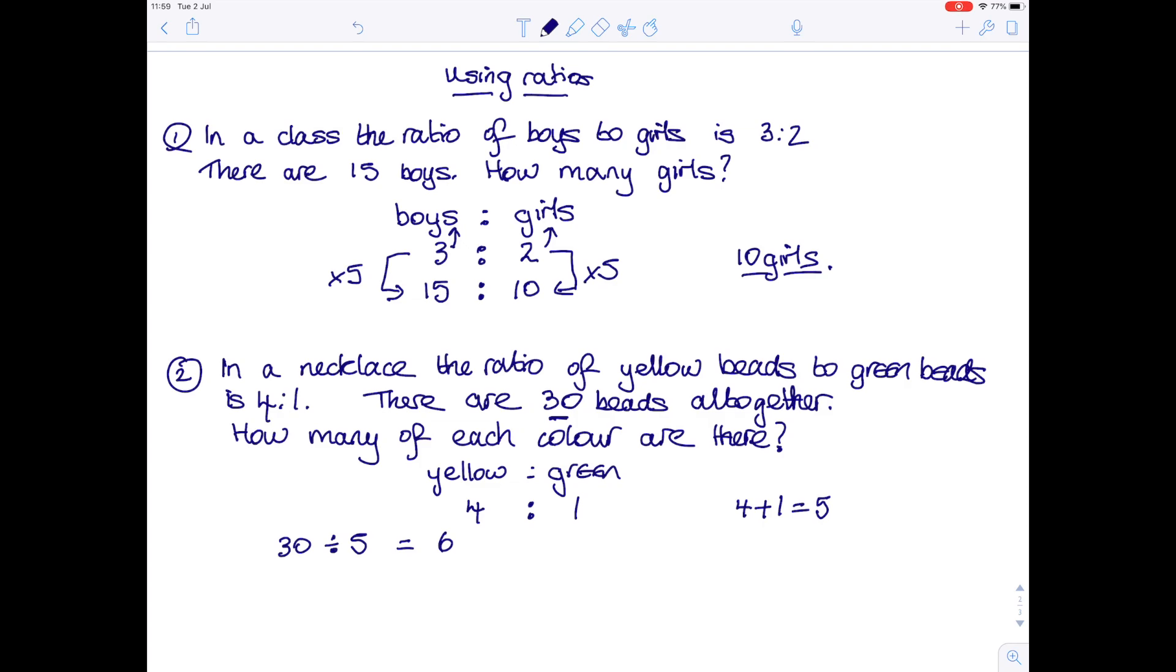This time you need to go back to your ratio and multiply each side by 6, because there are 6 groups of beads in which there are 4 yellow and 1 green. So 4 times 6 is 24, 1 times 6 is 6. That means we have 24 yellow beads and 6 green beads. And just as a quick check, if you add 24 and 6 together, you do indeed get 30 beads.